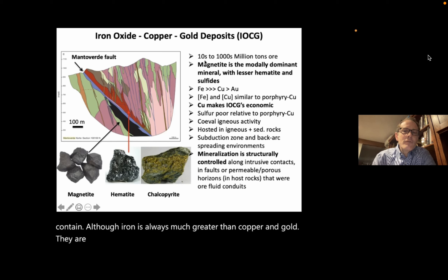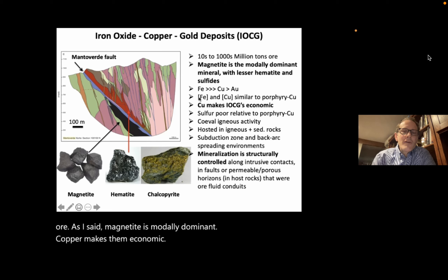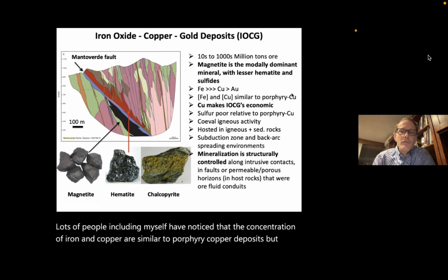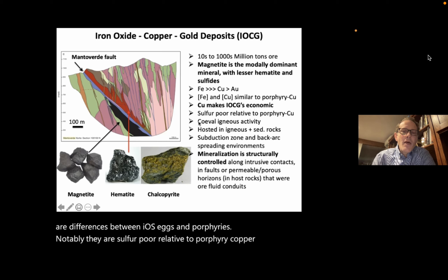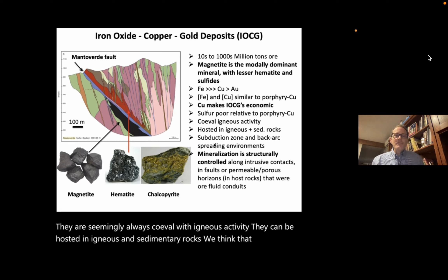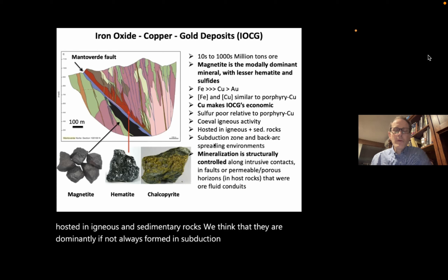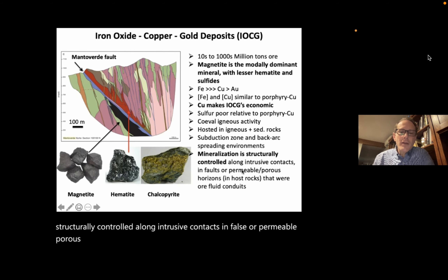IOCG deposits are very large — from tens to thousands of million tons of ore. They are sulfur poor relative to porphyry copper deposits, seemingly always co-eval with igneous activity, and can be hosted in igneous and sedimentary rocks. They are dominantly formed in subduction zone and back arc spreading environments, and mineralization is almost always structurally controlled along intrusive contacts, faults, or permeable porous horizons that were conduits for ore fluids.